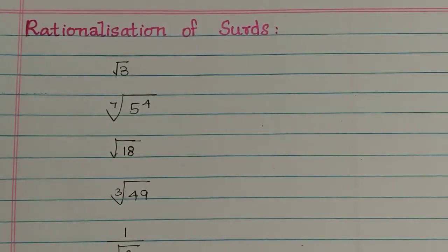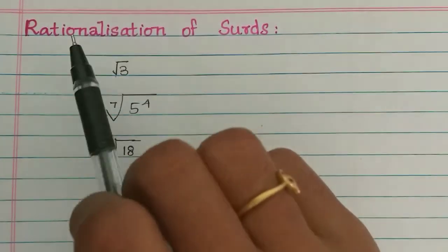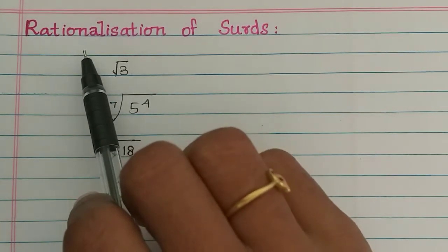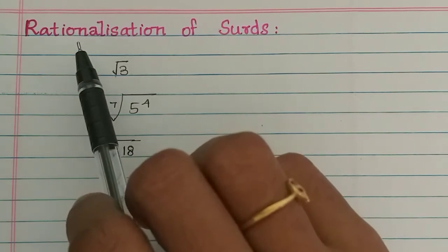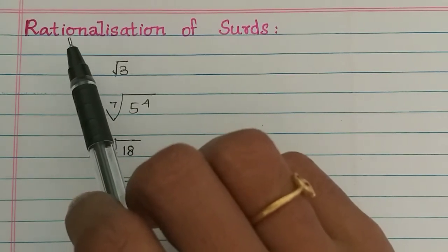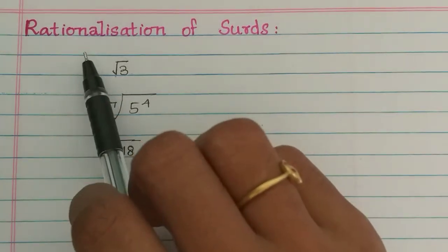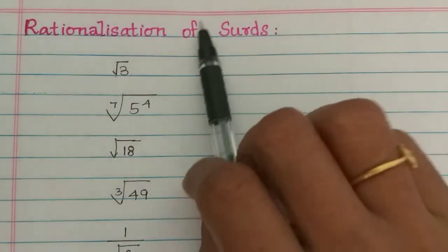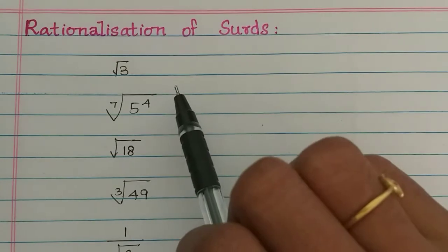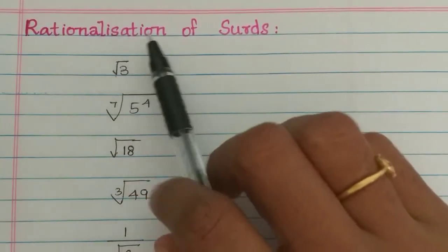Hi students, in this video we will talk about rationalization of surds. What is rationalization? A rational number is one that is terminating or non-terminating and recurring. This is rationalization. A number that is not a rational number is an irrational number. A surd is not a rational number — that is rationalization of surds.